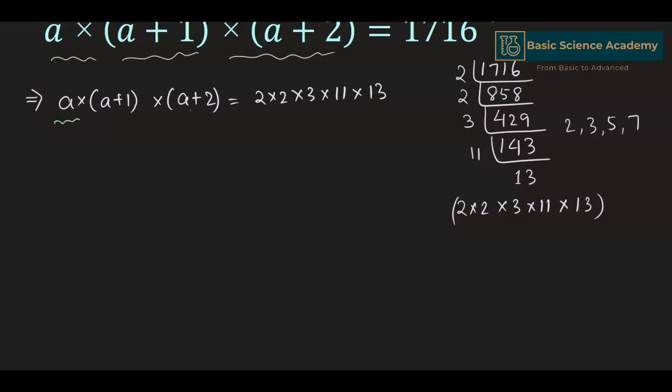Now a, a + 1, and a + 2 are 3 consecutive integers. Hence we have to arrange these prime factors as the multiplication of 3 consecutive integers.